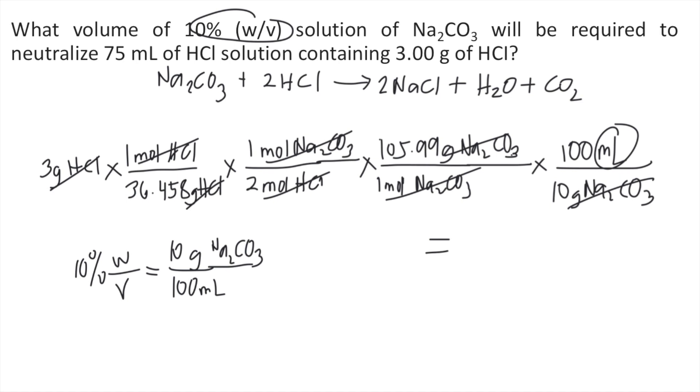So that's 3 times 1 divided by 36.458 times 1 divided by 2 times 105.99 divided by 1 times 100 divided by 10. And you will get approximately 43.6 ml. So the answer to this question is 43.6 ml.